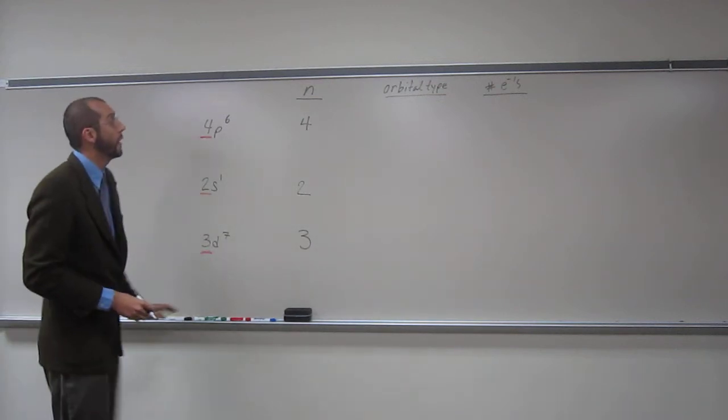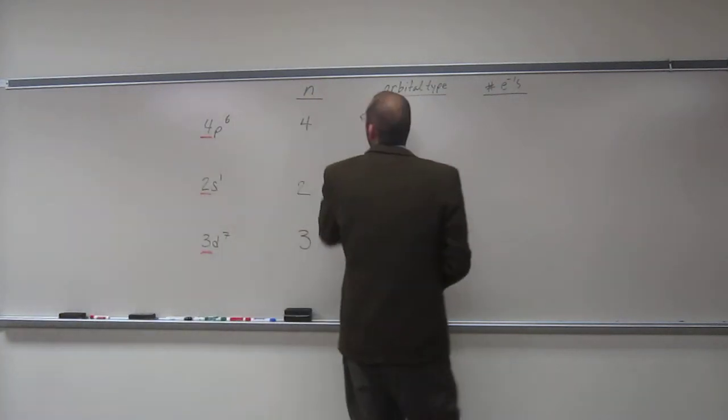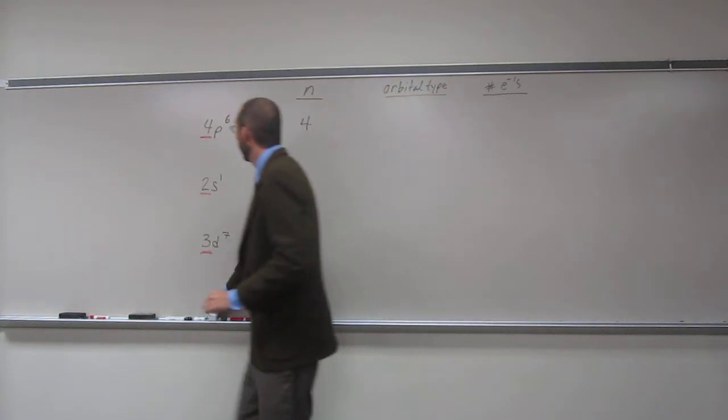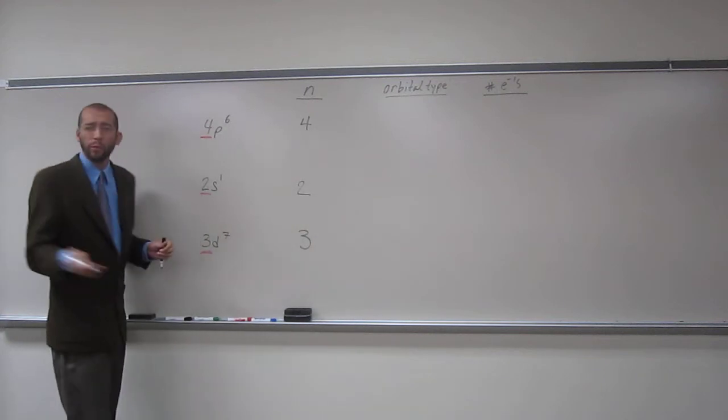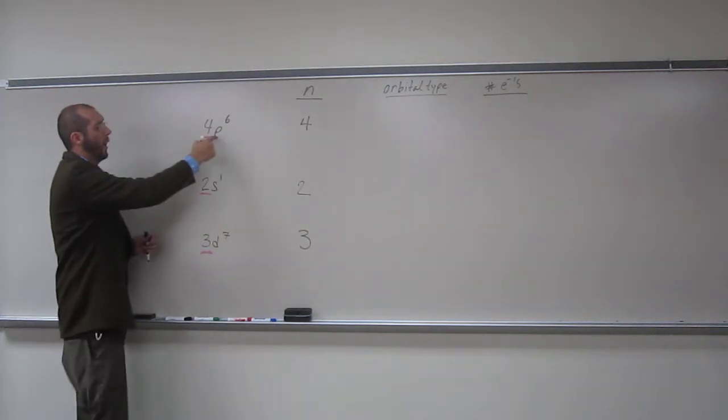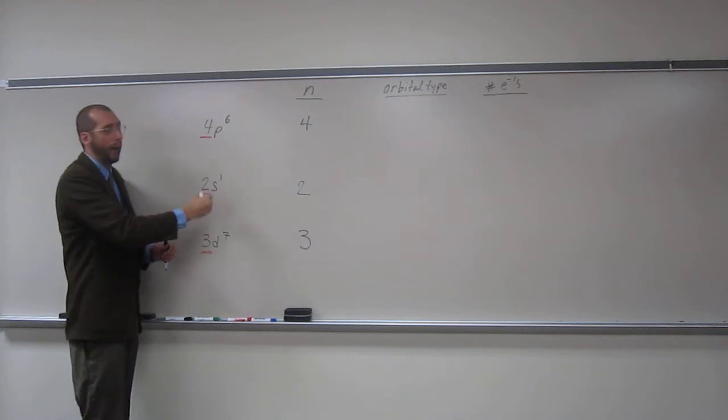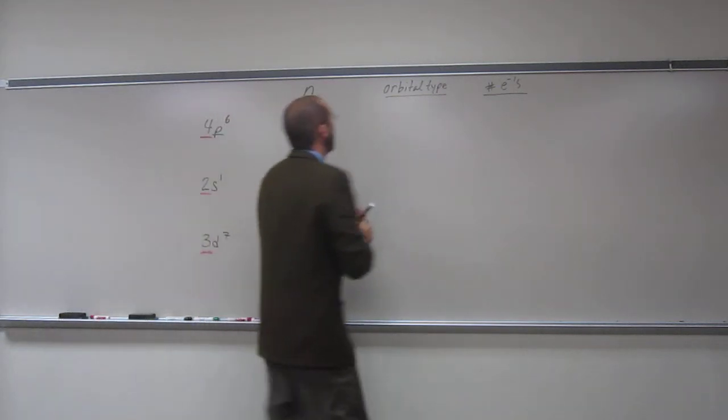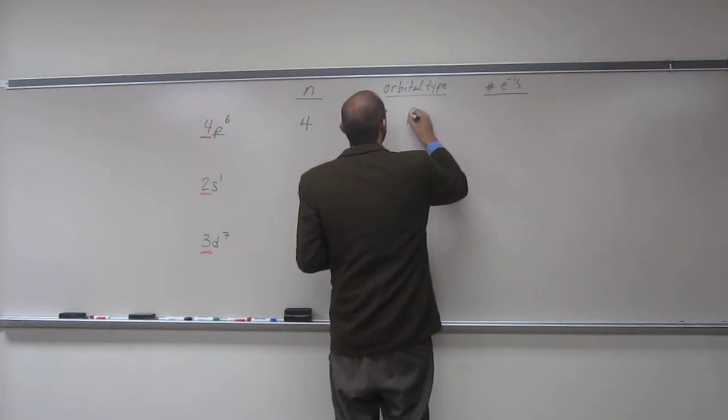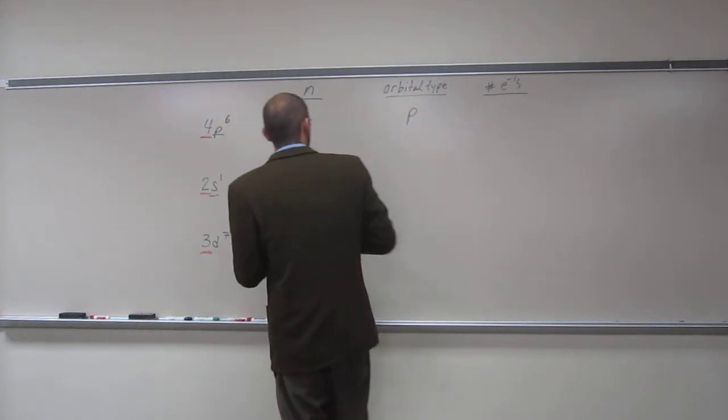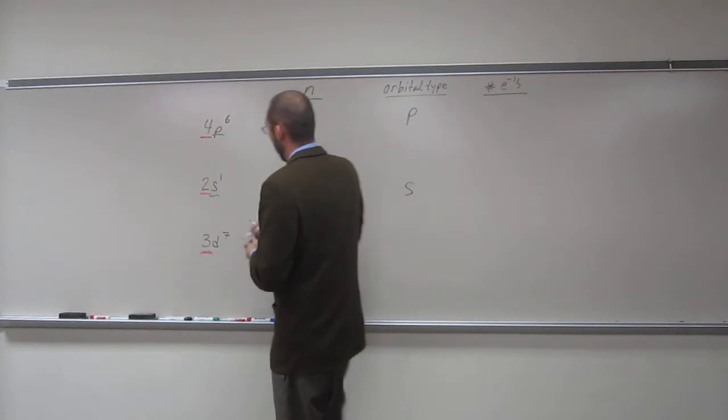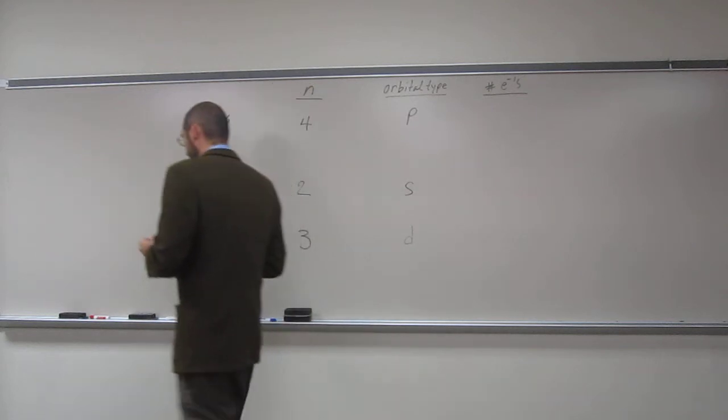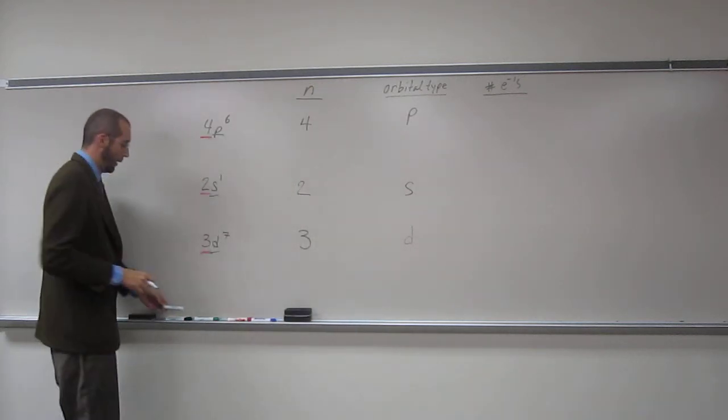So now we want to say, well, what orbital type is represented by this shorthand configuration? So the orbital type, as you probably know, is represented right here by the letter. So in this one, it's a P orbital, this one, S orbital, and this one is a D orbital.